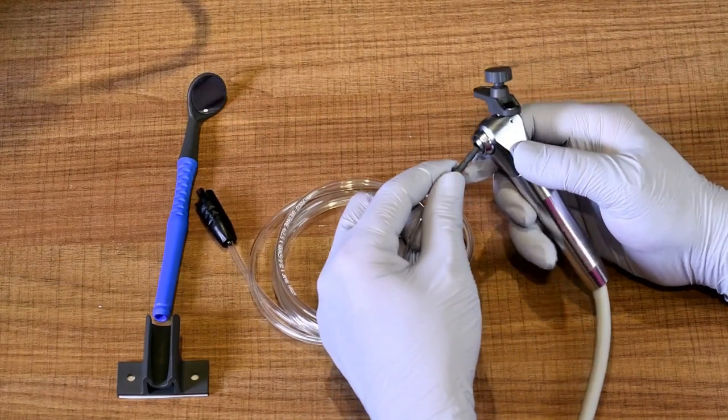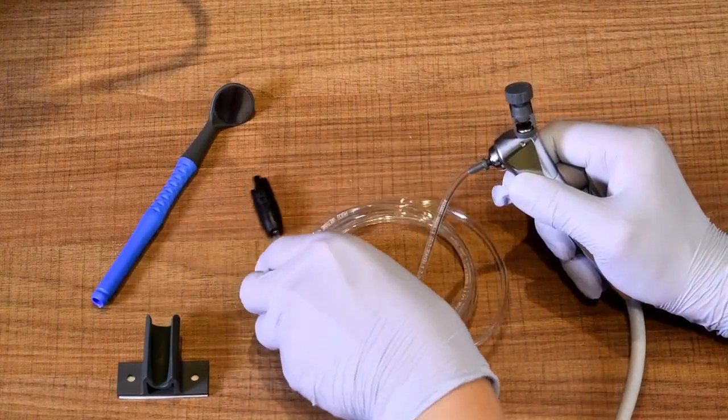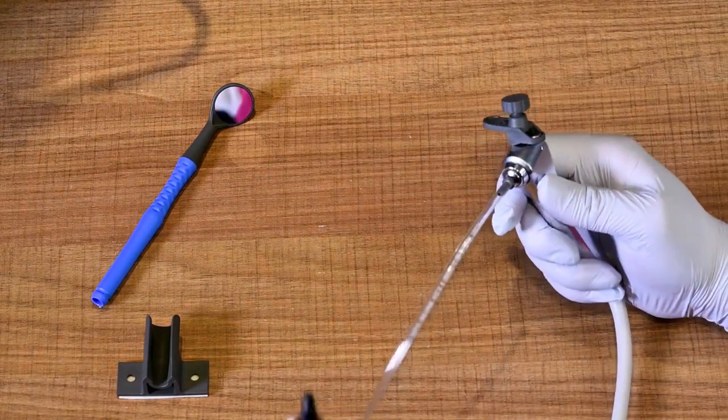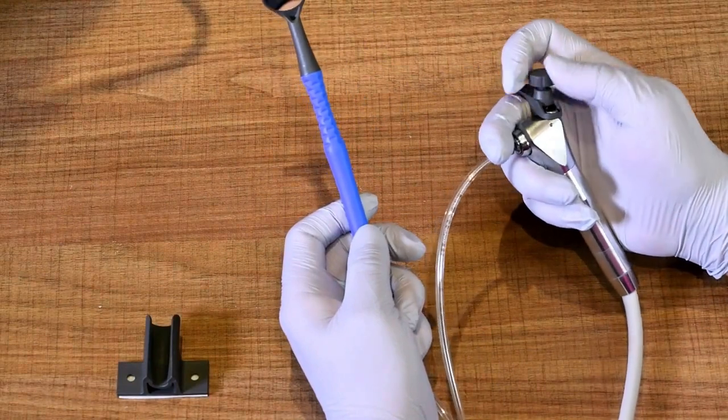Insert one end of the tubing directly into the air water syringe. The other end of the tubing will connect directly to the base of the mirror. Once installed, you can adjust the airflow to your liking.